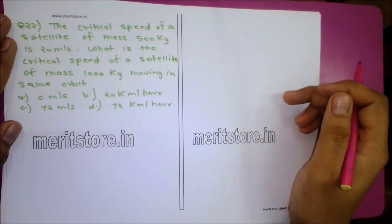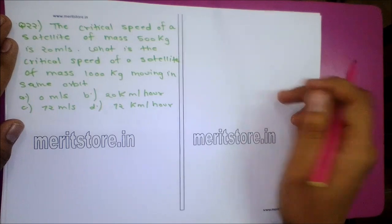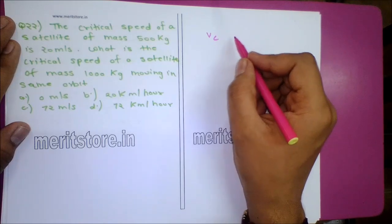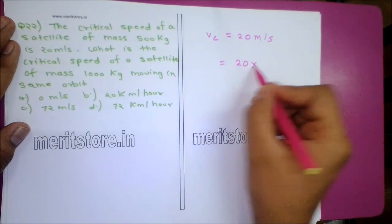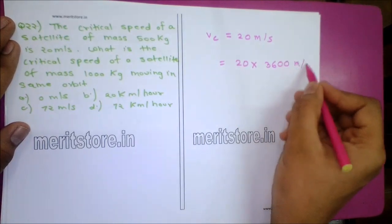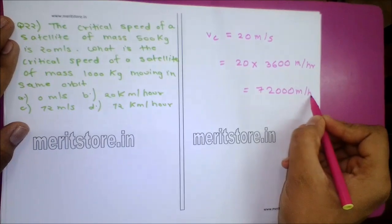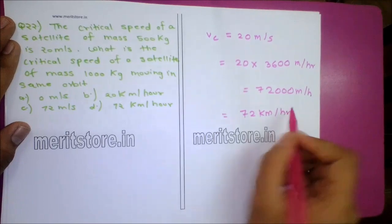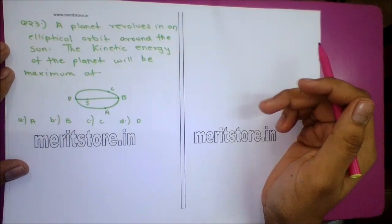Question 22: The critical speed of a satellite of mass 500 kg is 20 m/s. What is the critical speed of a satellite of mass 1000 kg in the same orbit? Critical speed is independent of the mass of the satellite. Vc = 20 m/s = 20 × 3600 m/hr = 72,000 m/hr = 72 km/hr. Option D is the correct answer.